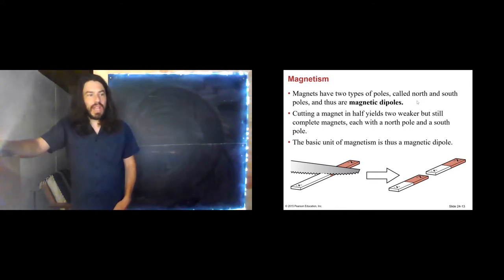Magnets have two types of poles, a north and a south pole, called magnetic dipoles. And they always come in pairs. This is the important point here. The basic unit of magnetism is a magnetic dipole. Nowhere in the universe will you find a north pole all by itself, or a south pole all by itself. Those are called magnetic monopoles. They don't exist, which is really a little bit interesting.